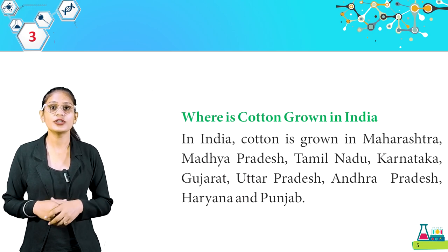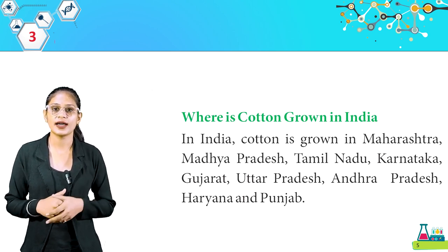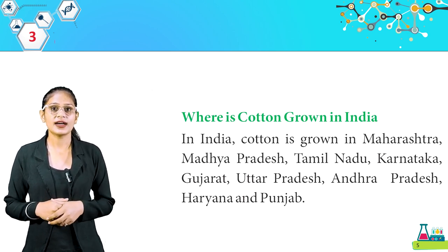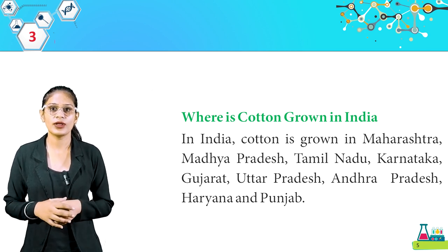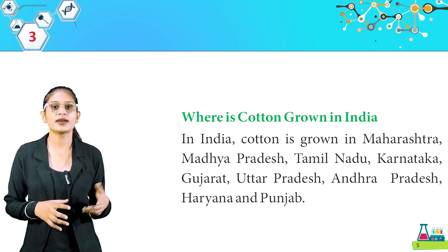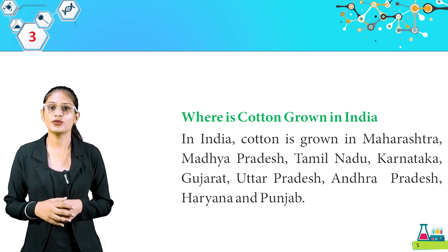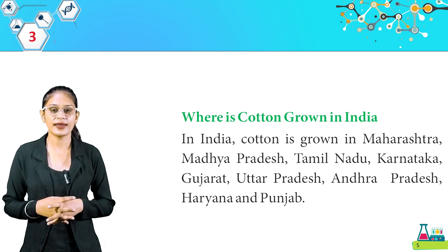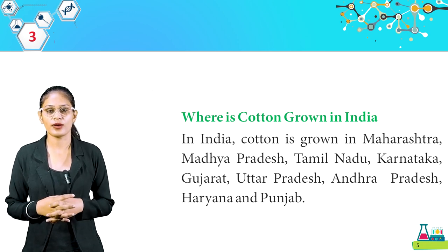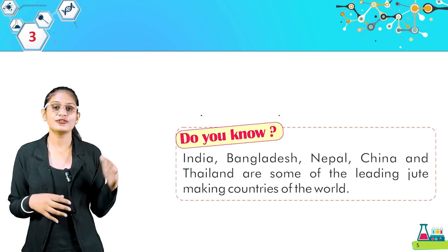Where is cotton grown in India? In India, cotton is grown in Maharashtra, Madhya Pradesh, Tamil Nadu, Karnataka, Gujarat, Uttar Pradesh, Andhra Pradesh, Haryana, and Punjab.